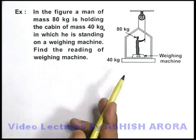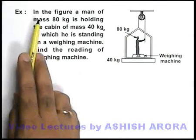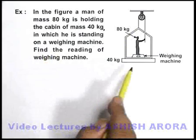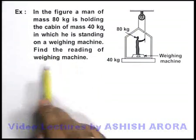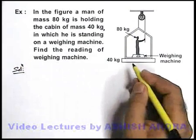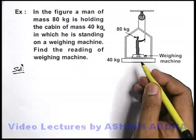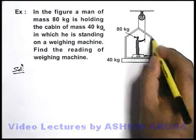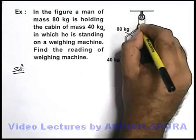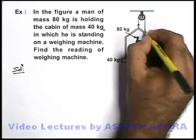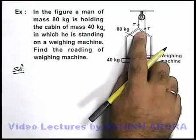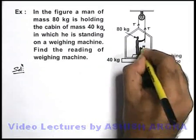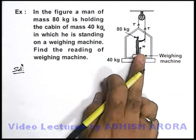Let us take one more example to understand the concept of a weighing machine. A man of mass 80 kg is holding the cabin of mass 40 kg in which he is standing on a weighing machine. The man holds a string passing over a pulley connected to the cabin. Due to the weights of the cabin and man, tensions act on the system in the upward direction. The man pushes the weighing machine with normal reaction N, and the machine pushes the man back with upward force N.